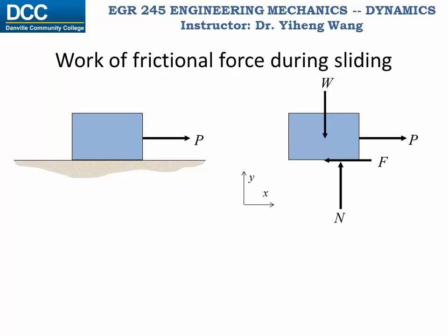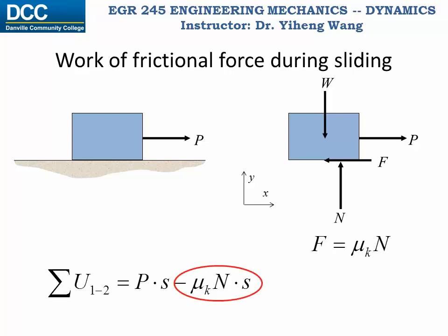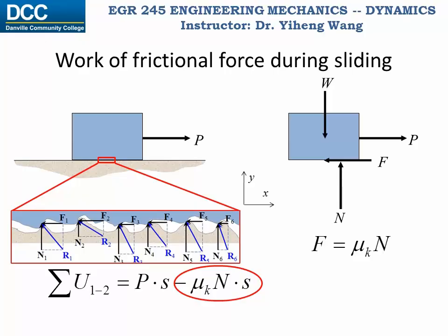When an object is sliding on a surface, the frictional force is evaluated as μ_k times the normal force N, where μ_k is the coefficient of kinetic friction. When accounting for the work done to the object, we can use the magnitude of the frictional force multiplied by the displacement of the object. Although this is not the true work done by the frictional force — since friction is the resultant of numerous forces on contacting surfaces whose displacements are not necessarily equal to S — it is still reasonable because it accounts for the total effect of the true work done by friction as well as the heat loss.